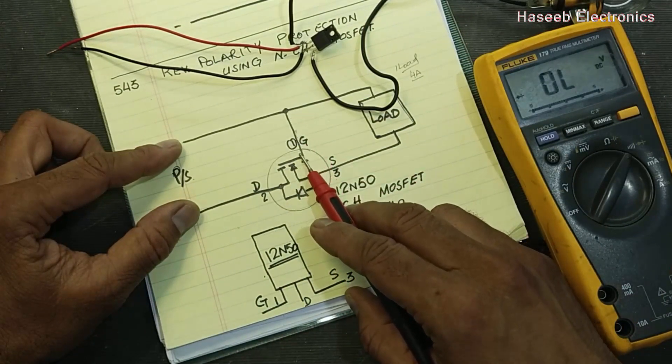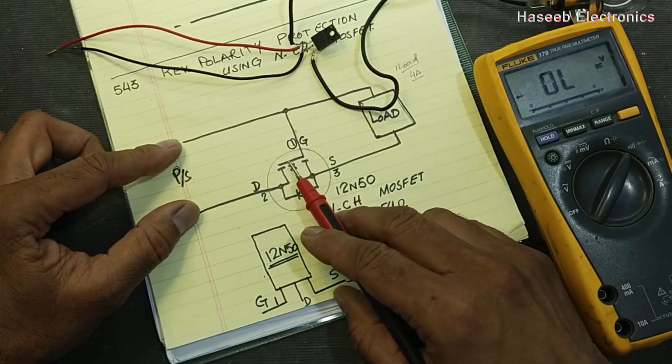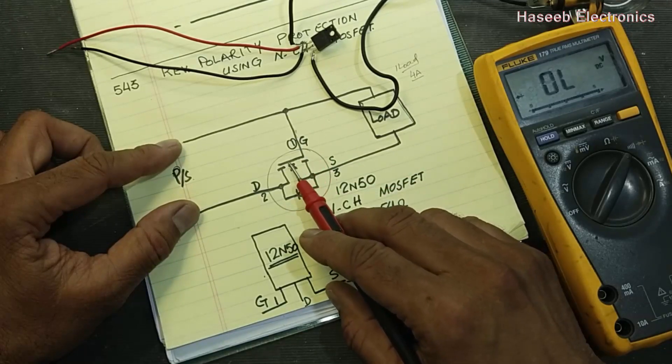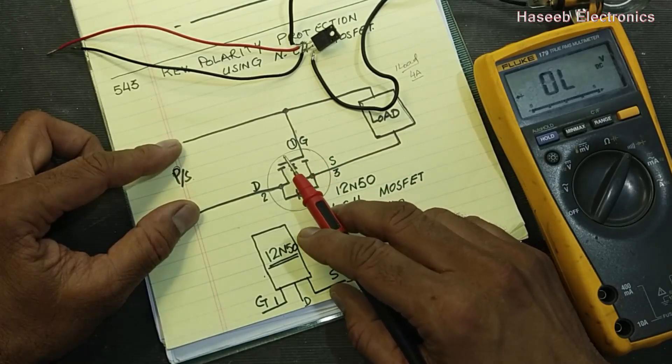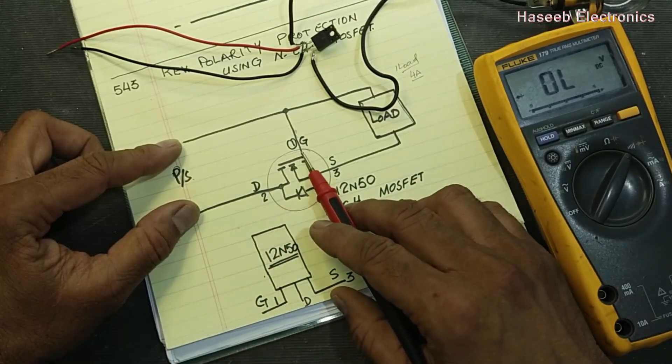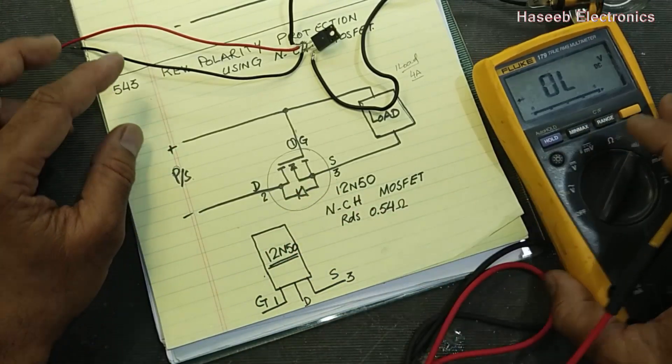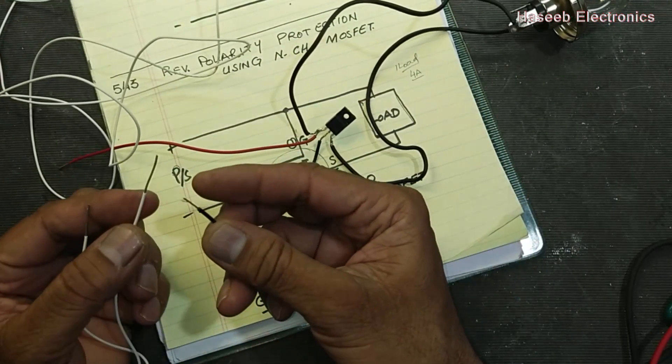At that time our gate is at ground potential. Gate needs positive voltage, 4 volt threshold to turn on, that is the minimum voltage. This will block the circuit. Now I don't know the polarity of the voltage.